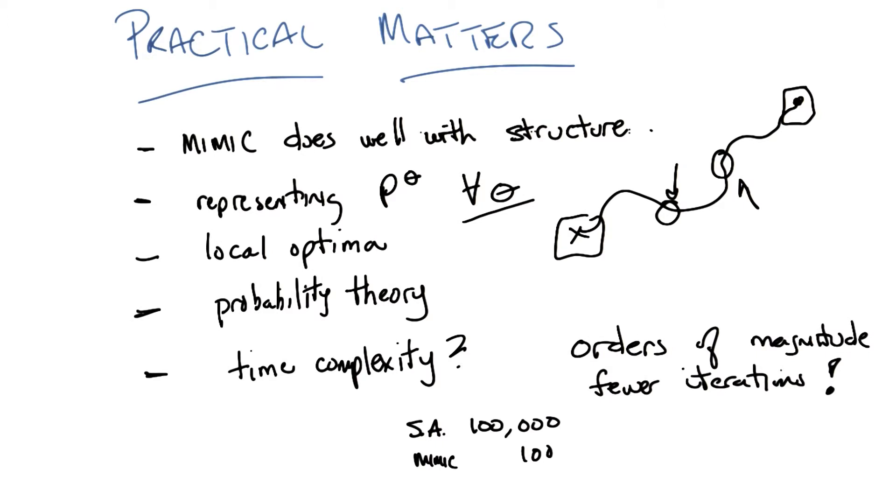Because it might give a worse answer? Well in practice it doesn't. So these are cases where both simulated annealing and MIMIC, or randomized hill climbing, or genetic algorithms, actually eventually do find the answer. MIMIC just finds it in orders of magnitude fewer iterations.